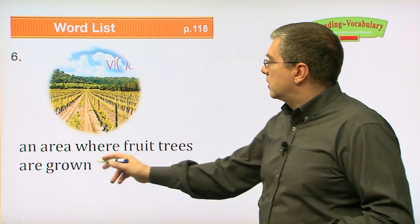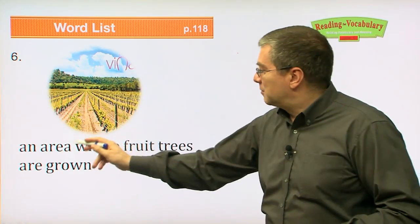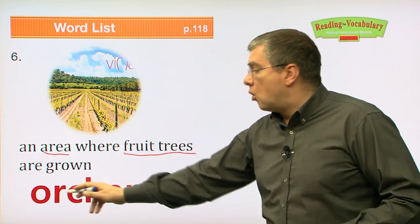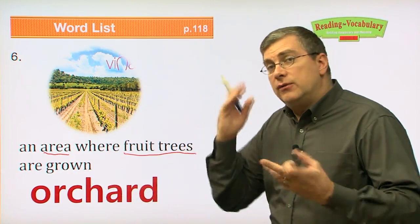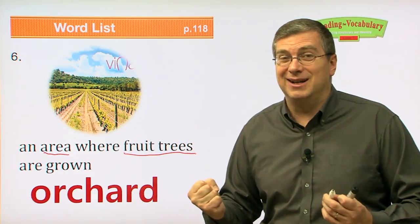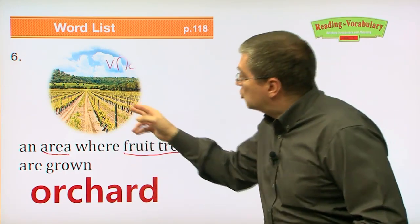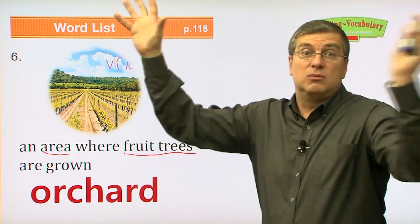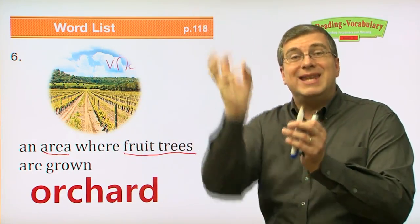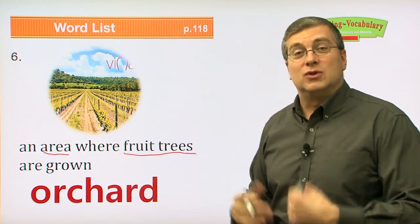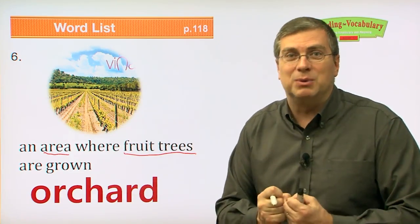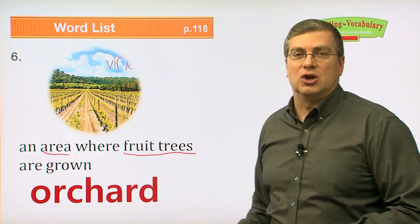Next one: an area where fruit trees are grown. This is not wilderness — this is a farm, a place where fruit trees are grown. We have a special name for this kind of farm: it's called an orchard. If you wonder where your apples, oranges, or cherries come from — they come from trees grown in a field like this. Farmers plant the cherry trees, apple trees, or orange trees in rows so they're easy to pick. That's an orchard. In the fall when the fruit is ripe, it's a great place to go.